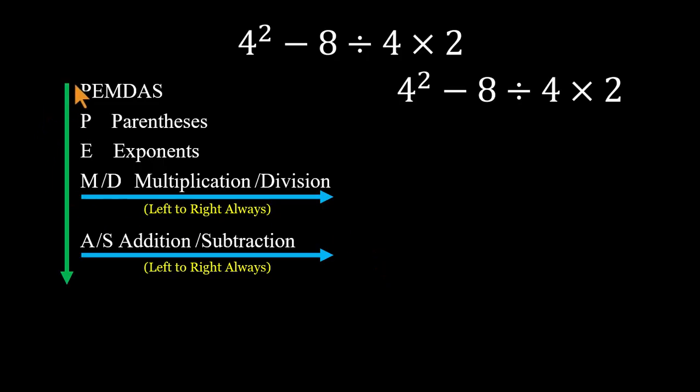You've got to follow both the order of operations and left to right when you've got equals. Let's solve it properly. Exponents first. 4 squared equals 16.